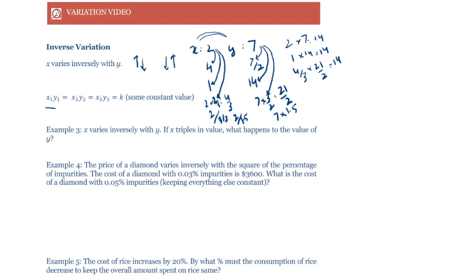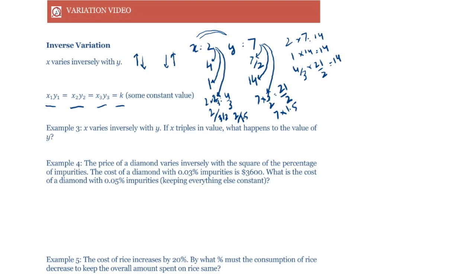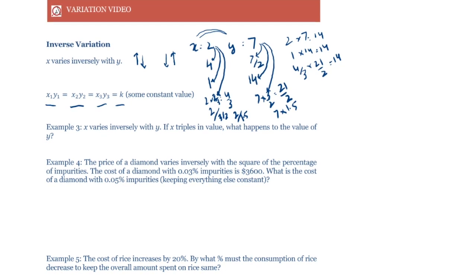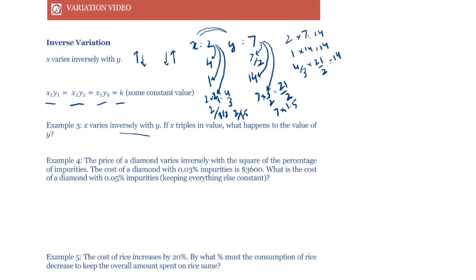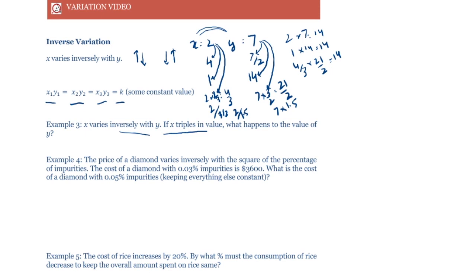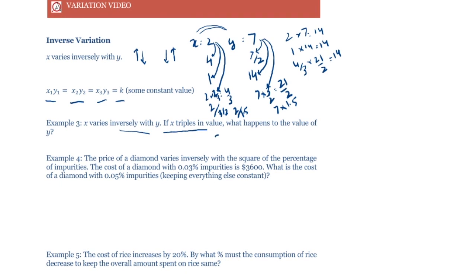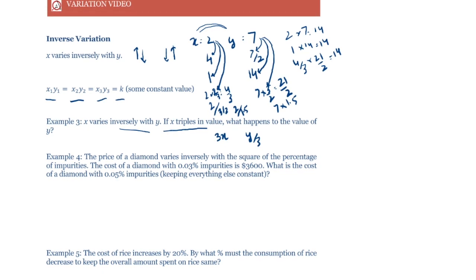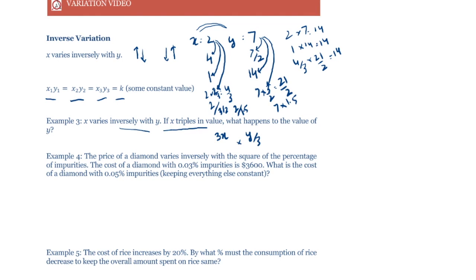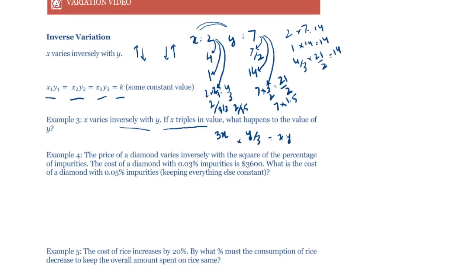We write inverse variation as X1·Y1 = X2·Y2 = X3·Y3 = k. Example: X varies inversely with Y — if X triples in value, what happens to Y? Y becomes one-third of its value. If X becomes 3X, Y becomes Y/3, so the product stays XY, the same constant.